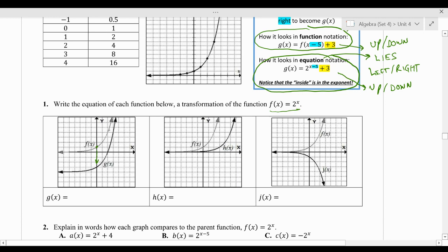So I have, it looks like 1, 4 goes down by 1, 2, 3, 4 spaces, 2. So I'm going to say the only transformation with g of x, so from f of x to g of x, is going from 2 to the x. I don't think there's any right or left movement. So I'm going to say 2 to the x minus 4 because it's going down by 4. Alright.